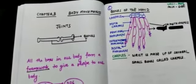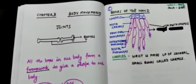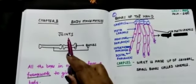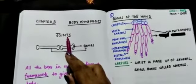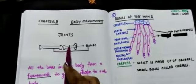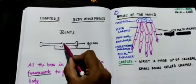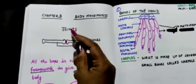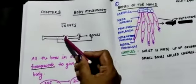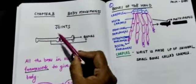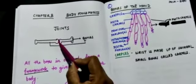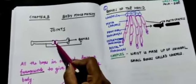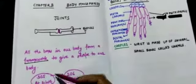Good morning sixth class. Today we are dealing with Chapter 8, and the name of the chapter is Body Movements. We have already completed the topic of joints — one bone is connected with another bone, and this point of attachment is known as a joint. We can move at the point of joint, meaning there is movement in the bone because of joints.